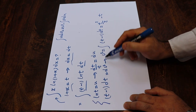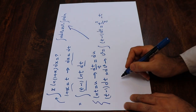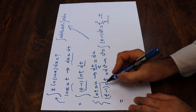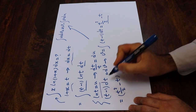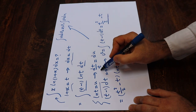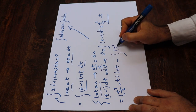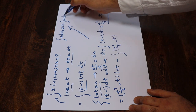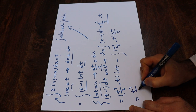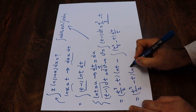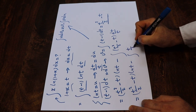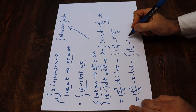Now you need to substitute these expressions into the integration by parts formula. This integral equals uv minus the integral of v du, that is (t squared over 2 minus t) times ln(t) minus the integral of (t squared over 2 minus t) times (dt over t). Simplifying, the integrand becomes t divided by 2 minus 1 dt.